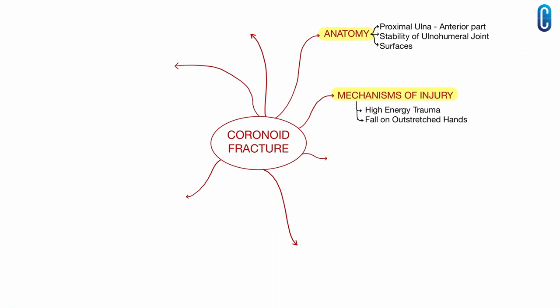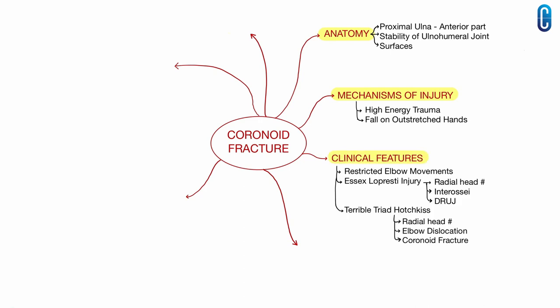Under mechanisms of injury, coronoid fractures occur following high energy trauma and fall on outstretched hands. In clinical features, there will be restriction of elbow movements. Remember to rule out Essex-Lopresti injury and terrible triad injury. Under investigations, the diagnosis is confirmed with an AP and lateral X-ray of the elbow. If you need a better idea of the fragments, a CT may be ordered. MRI assists in ligamentous injury diagnosis.